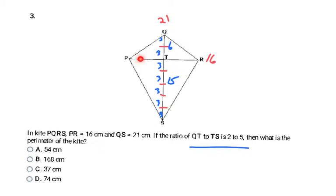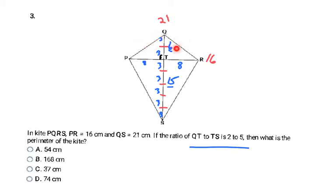Because this is a kite, the longer diagonal bisects the shorter one. So if P to R is 16, each half is 8. Now I know all the interior pieces but still need to find the outer side lengths. Since the diagonals of a kite are perpendicular, there is a right angle at the intersection — meaning there are right triangles in all four corners, and I can use the Pythagorean theorem to find the missing sides.